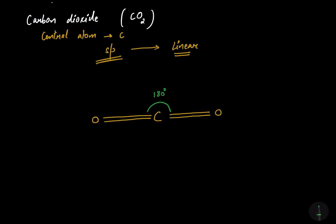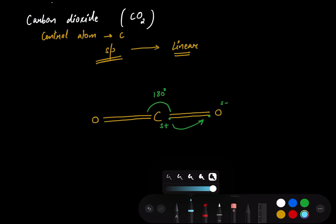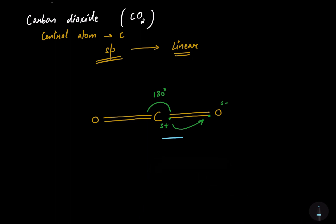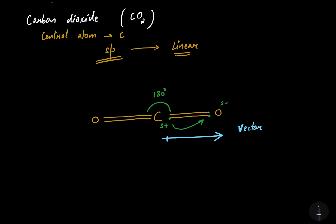Now, in the bond between carbon and oxygen, oxygen is more electronegative than carbon. So oxygen is going to attract the shared pair of electrons towards itself, thereby oxygen will acquire a delta negative charge and carbon will acquire a delta positive charge. So the vector or dipole of the CO2 molecule will be in this direction — that is, towards oxygen. This is called a vector, or we can also call it a dipole, or there's one more name: bond moment.